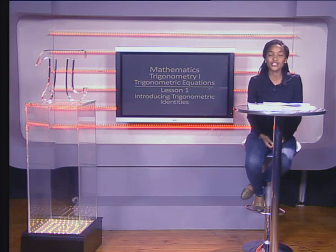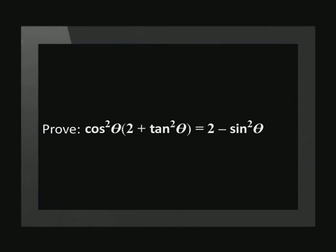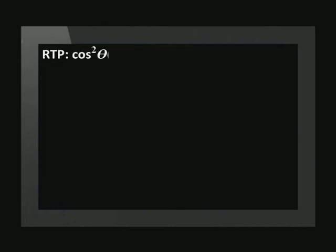Our next question also makes use of the quotient identity: tan theta equals sin theta over cos theta, with the restriction that cos theta cannot equal zero. Prove that cos squared theta times (2 plus tan squared theta) equals 2 minus sin squared theta. When we do this calculation, we need to lay it out in a particular way. We write the full statement: cos squared theta times (2 plus tan squared theta) equals 2 minus sin squared theta.